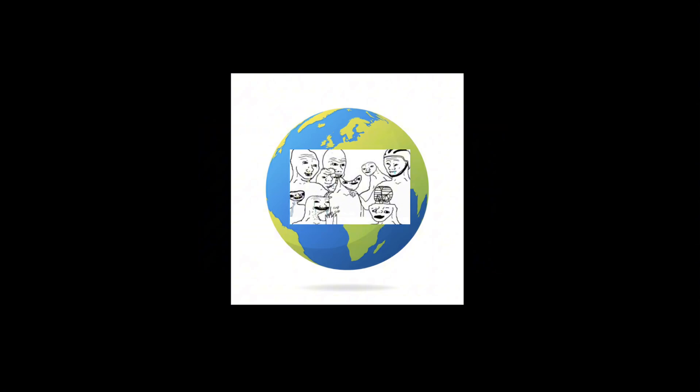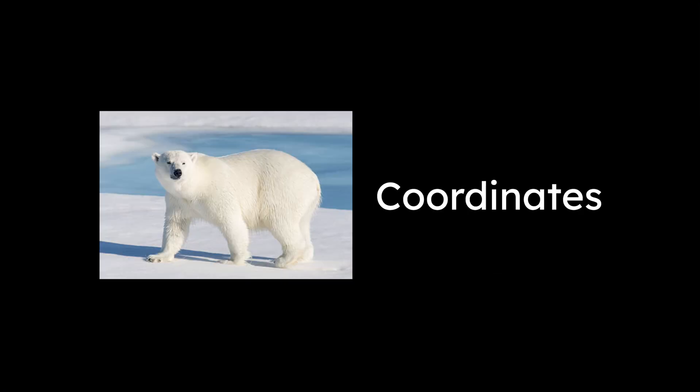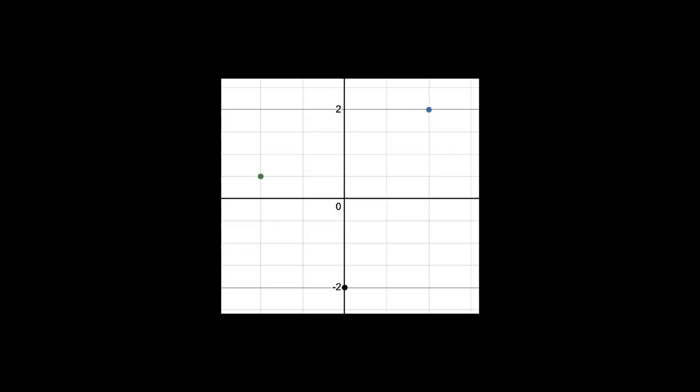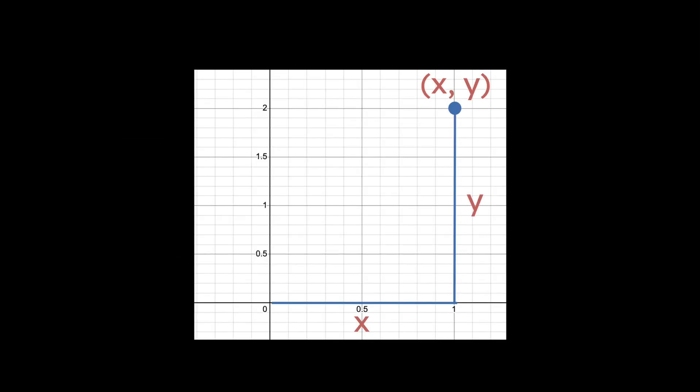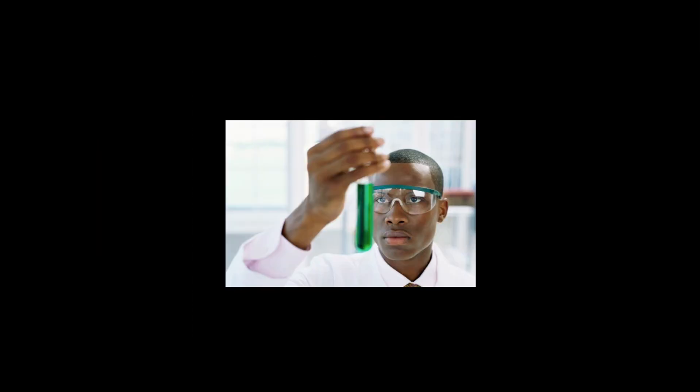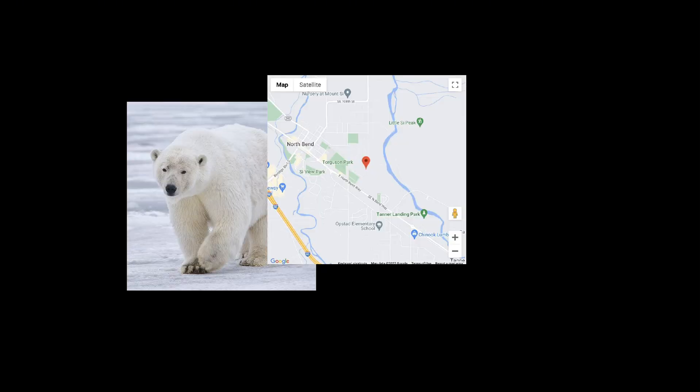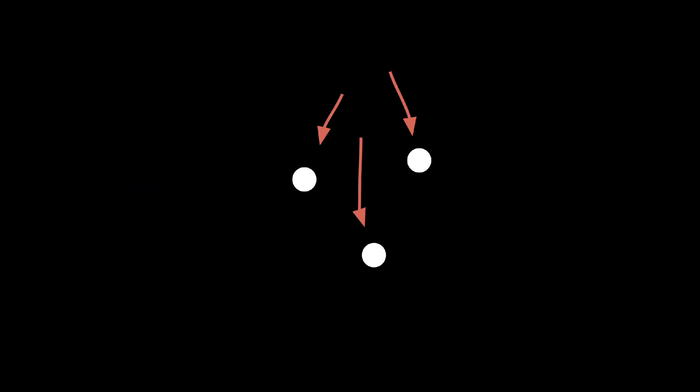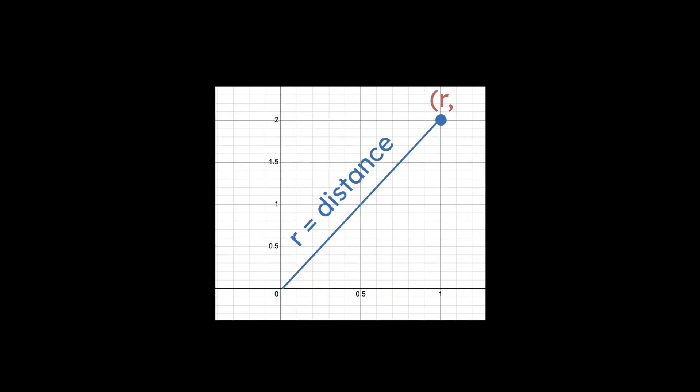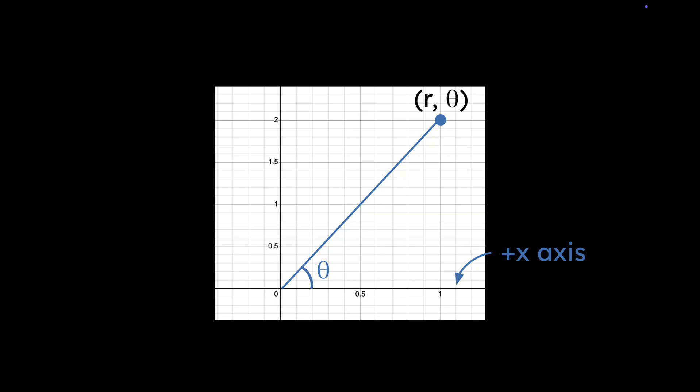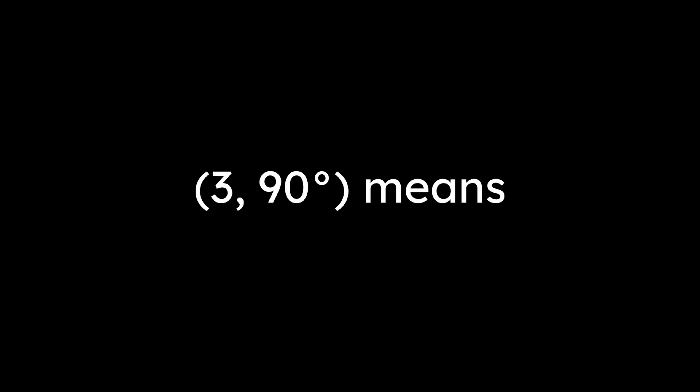Alright, let's head north. Why? Because of polar coordinates. Normally, we describe points on a plane with the ordered pair x comma y. This way of describing points is good in many cases, but it's sometimes better to use polar coordinates. Using polar coordinates, we describe points using r comma theta, where r is the distance from the origin, and theta is the angle from the positive x axis. So, 3 comma 90 degrees means a point 3 units away from the origin at a 90 degree angle, which is the same as 0 comma 3 in rectangular coordinates.